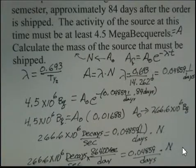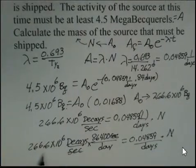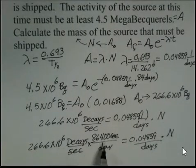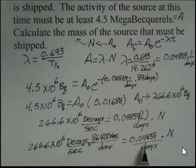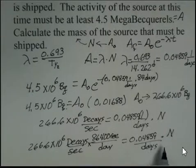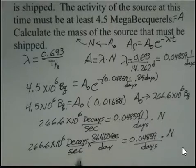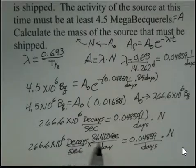So at this point, I'm going to put these numbers into a calculator. 266.6 times 10 to the 6, times 86,400 divided by 0.04859. The days are canceling. And this becquerel, this decays, really relates to the number of nuclei.